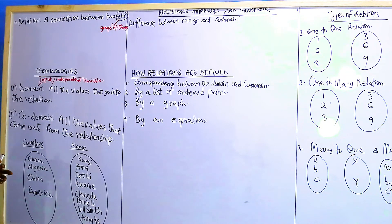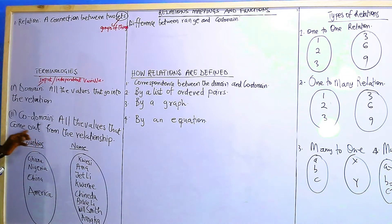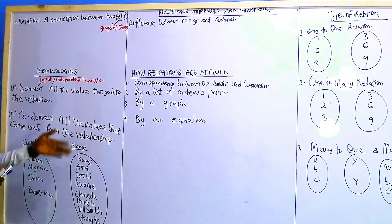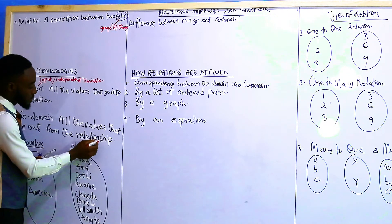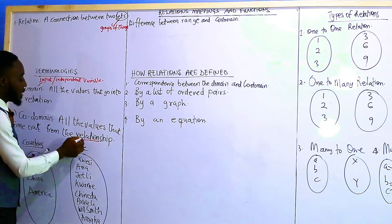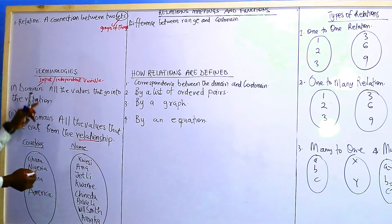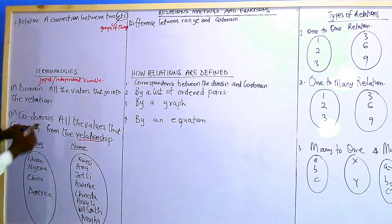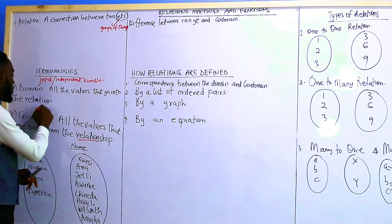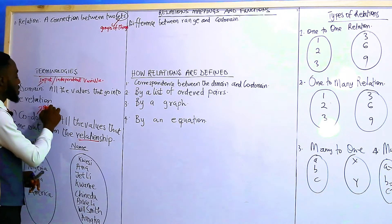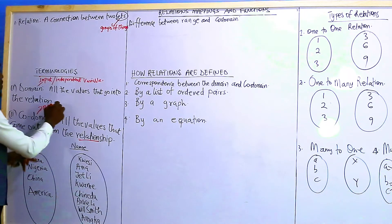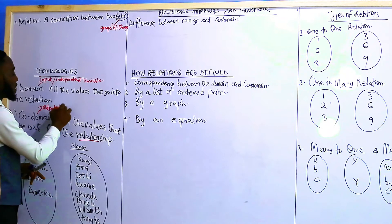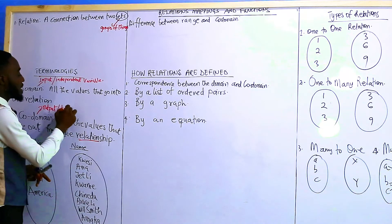Then we also have the co-domain, which speaks of all the values that come out from the relation. So the co-domain is called the output, and it can also be referred to as the dependent variable.